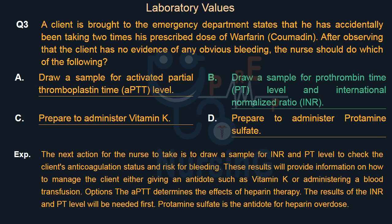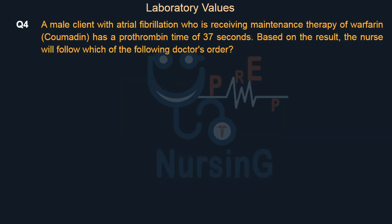A male client with atrial fibrillation who is receiving maintenance therapy of warfarin (Coumadin) has a prothrombin time of 37 seconds. Based on the result, the nurse will follow which of the following doctor's orders.